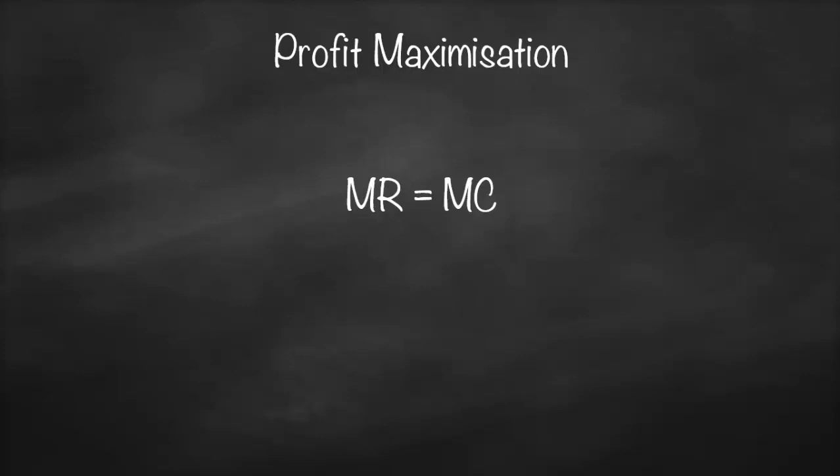The word 'marginal' means additional, incremental, or extra. Marginal revenue is the additional revenue if we produce one more unit, and marginal cost is the additional cost if we produce one more unit. Therefore, at marginal revenue equals marginal cost, this gives us Q* — our profit-maximizing output.